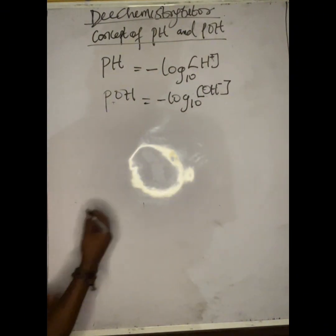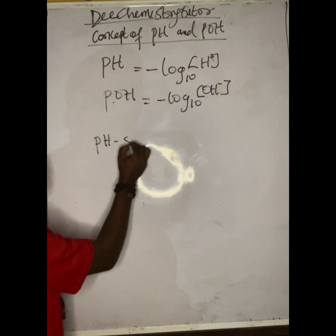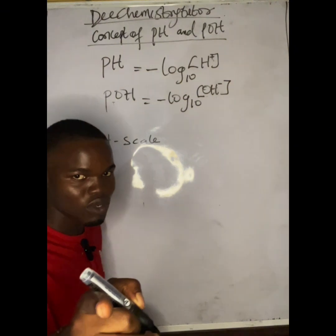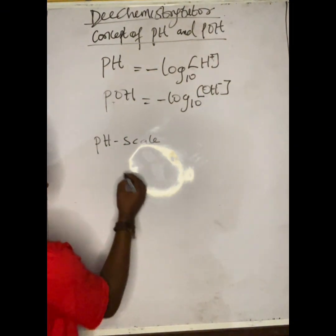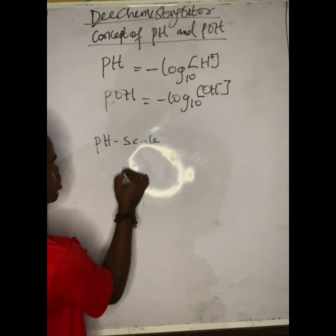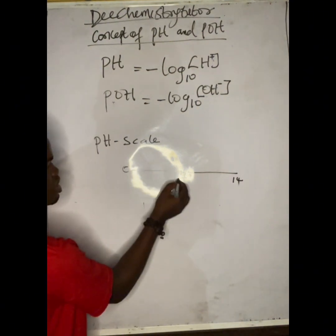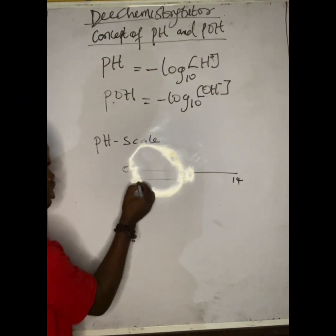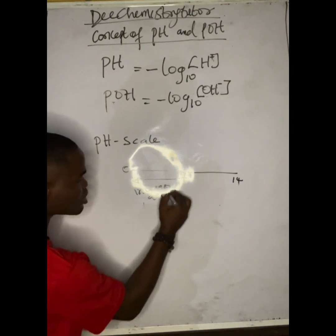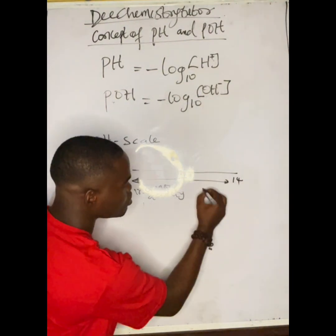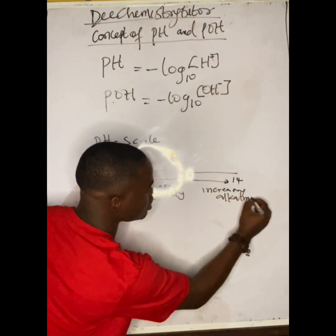There is something we call the pH scale — note it is the pH scale, not the pOH scale. That's because people make a particular mistake here when exam questions come up. The pH scale runs from zero to seven to fourteen. Going towards zero means increasing acidity, and going towards fourteen means increasing alkalinity.